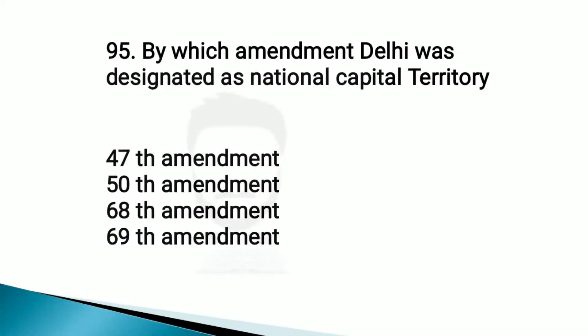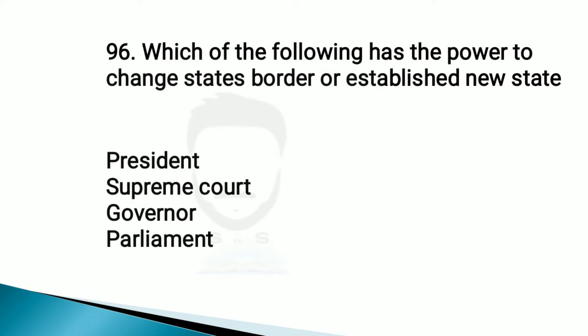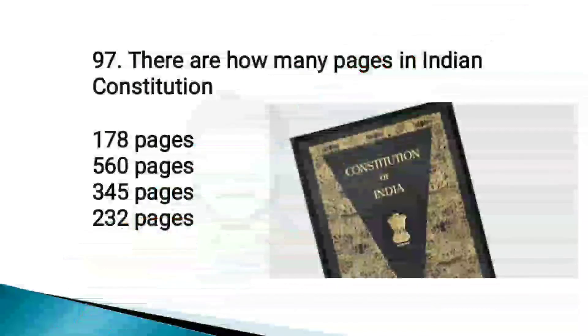By which amendment was Delhi designated as National Capital Territory? The 69th amendment. Which of the following has the power to change state borders or establish a new state? Parliament. There are how many pages in the Indian constitution? 232.